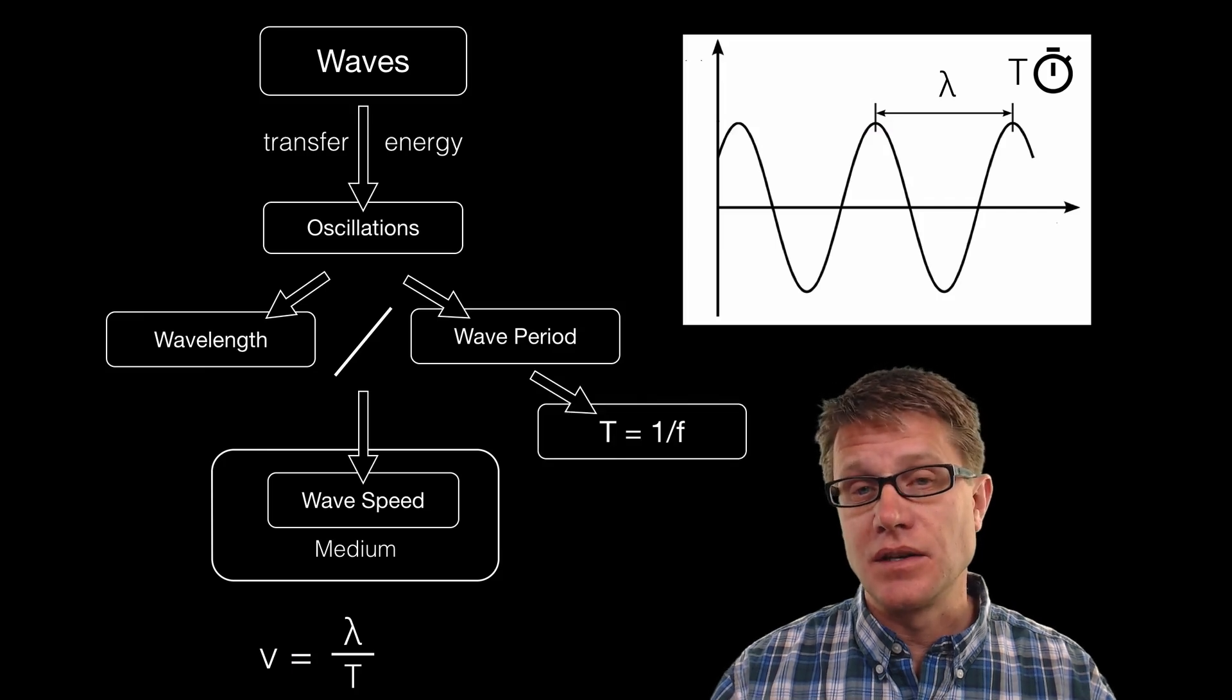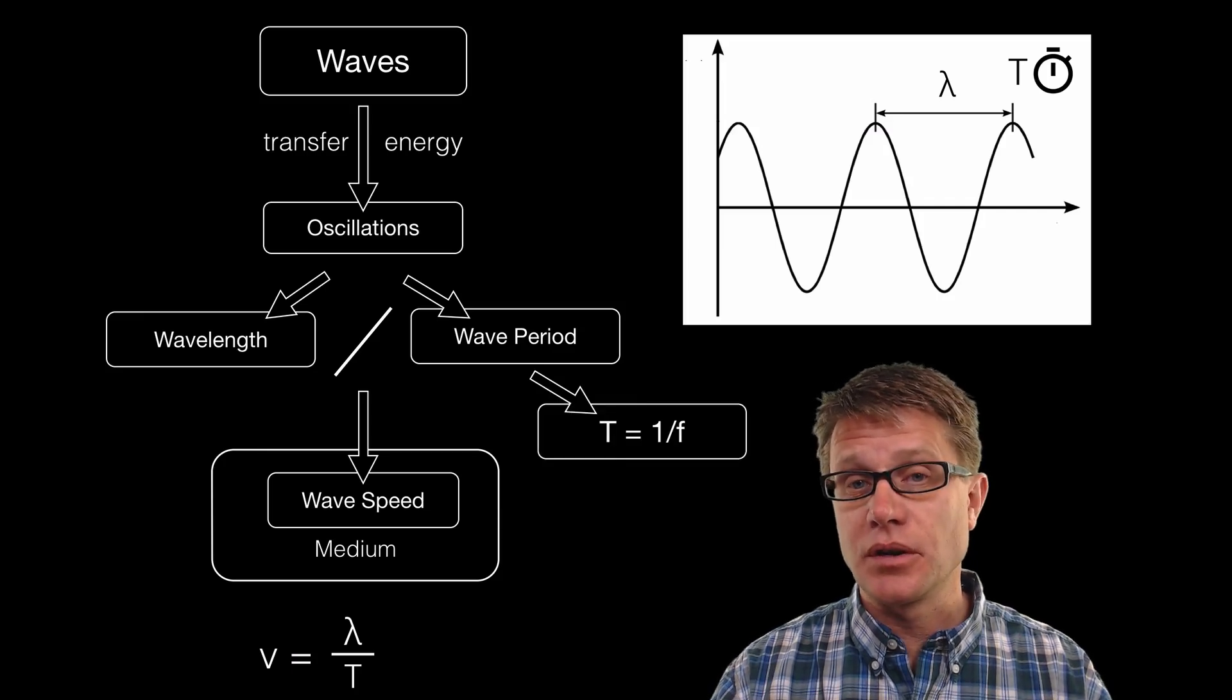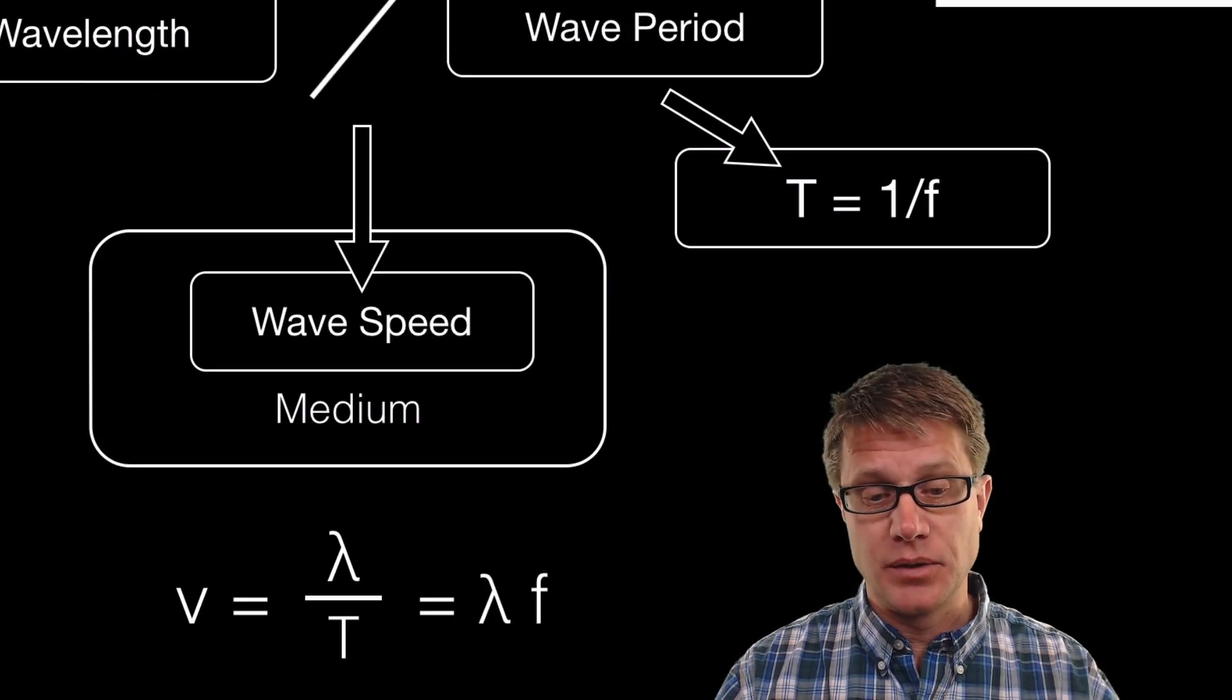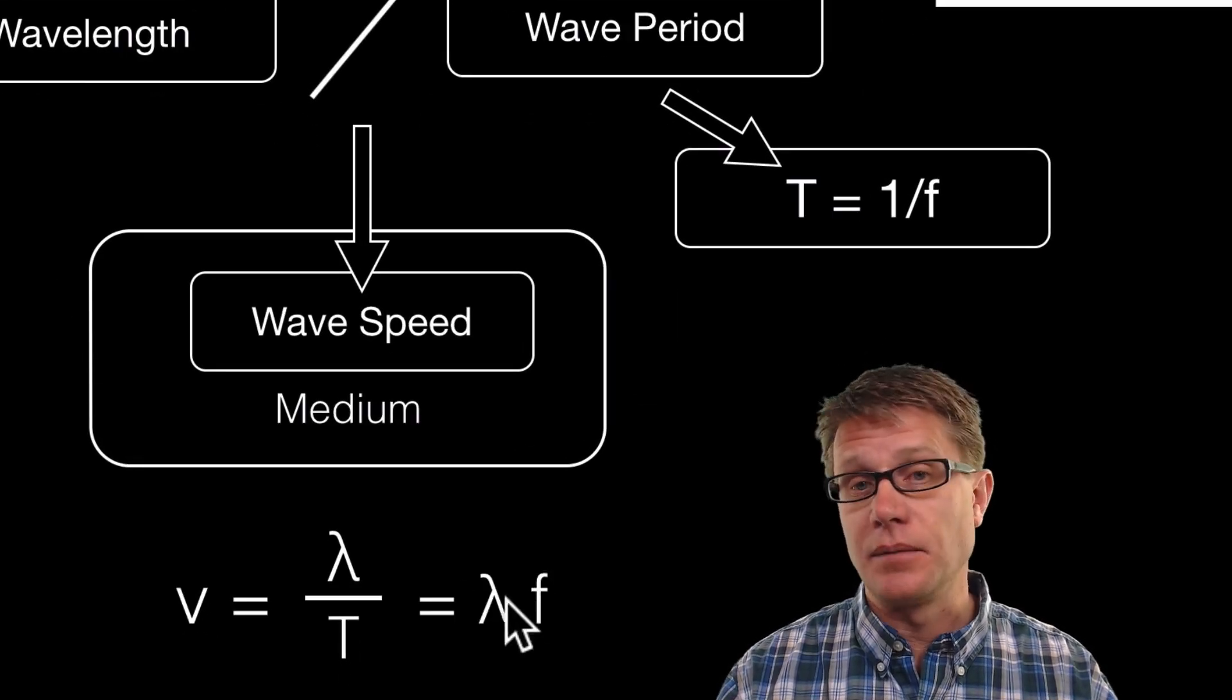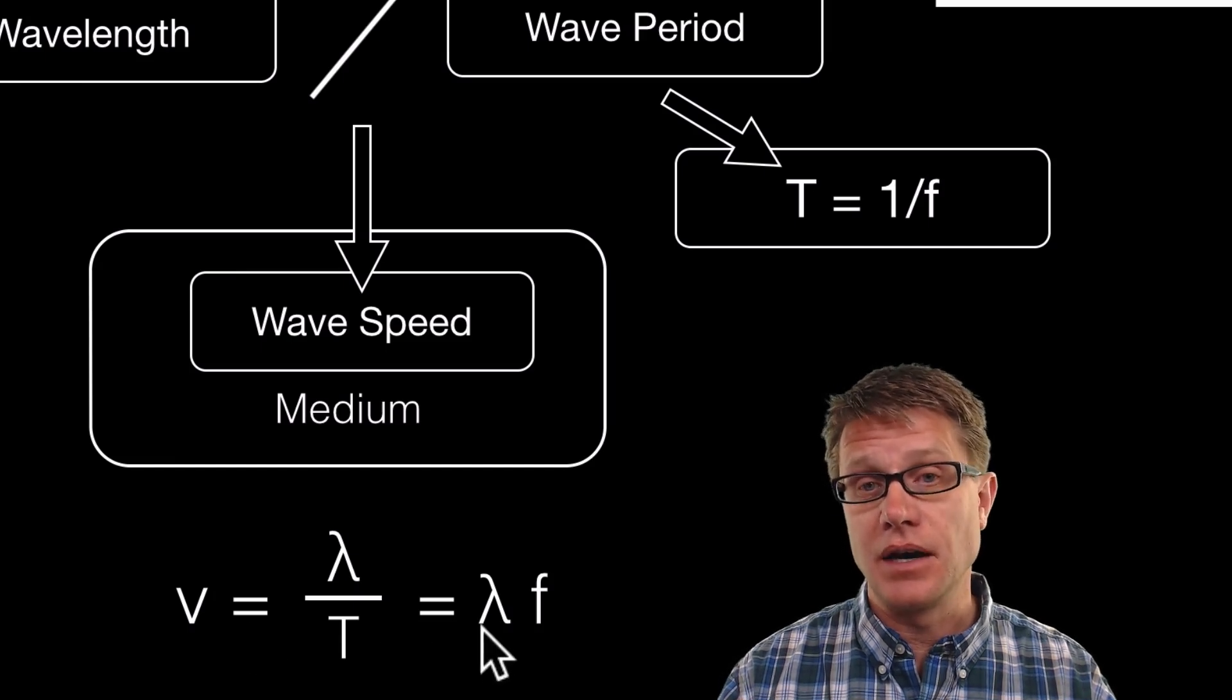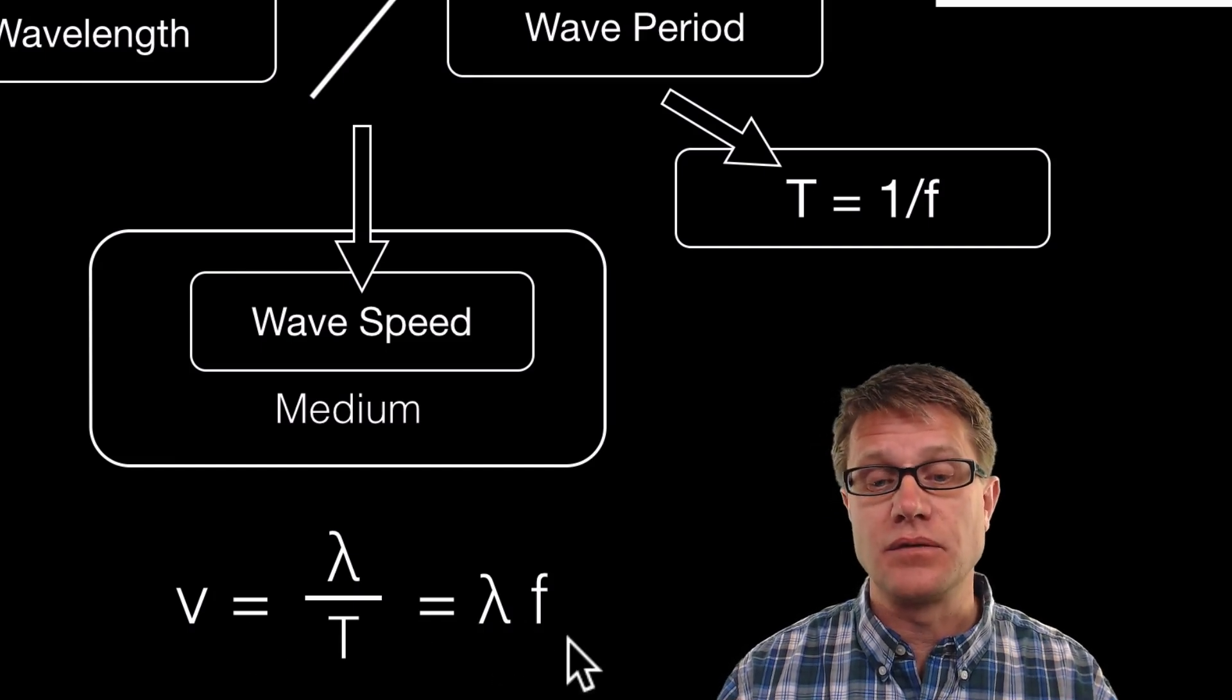Now lots of times since the frequency is the reciprocal of the period of time, instead of being written like that it will be written like this: v equals lambda f. In other words, the velocity or the speed of the wave is the wavelength times the frequency.